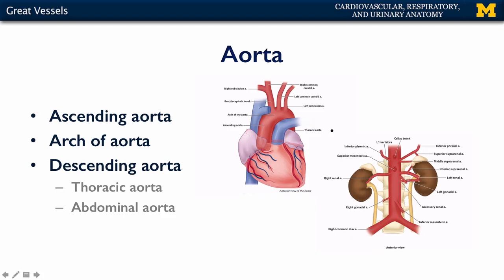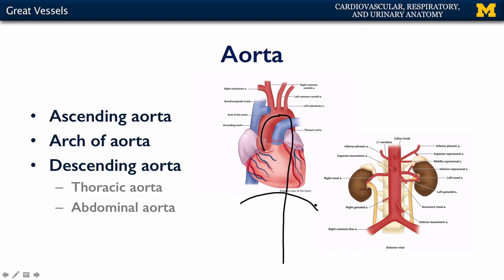The aorta is tripartite. There's an ascending aorta, which carries blood from the left ventricle up to the arch of the aorta, which is the second part, which then carries blood to the descending aorta, the third part. The descending aorta is divided into the thoracic aorta and the abdominal aorta, and the boundary between the two is the diaphragm.